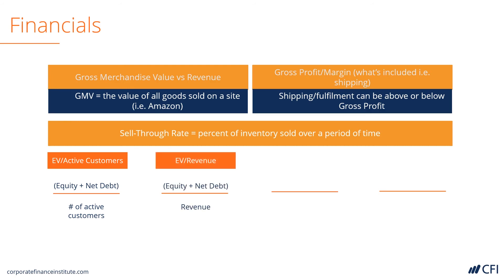EV to revenue gets a little bit closer to cash flow — again, the value of equity plus net debt divided by revenue. Multiples of EV to revenue could range anywhere from 0.5 times to 3 or 4 times depending on a variety of factors. EV to gross profit is the enterprise value divided by gross profit, getting closer still to cash flow because we've adjusted for gross margin, which can vary quite a bit across the industry.